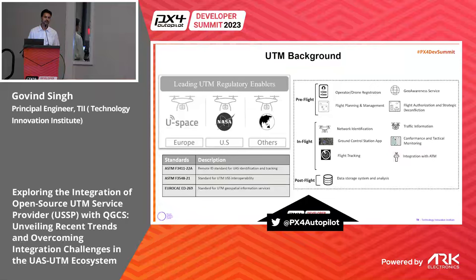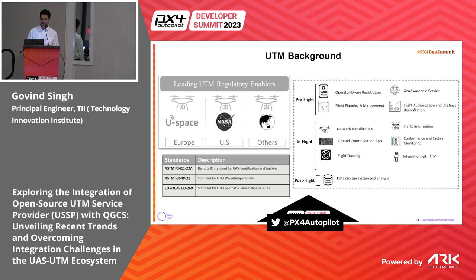UTM, or Unmanned Aircraft Traffic Management, is all about managing the airspace to enable multiple drones doing BLOS operations. In short, it's a traffic management ecosystem that includes drones, operators, UTM service providers, air navigation service providers, and regulators — essentially the civil aviation authority. Unlike manned aviation where you have ATCs with manual coordination, the UTM ecosystem uses digital infrastructure in terms of APIs for communication and control within the whole ecosystem.